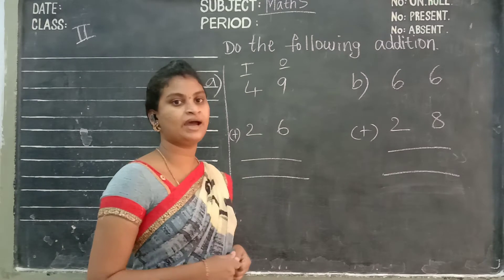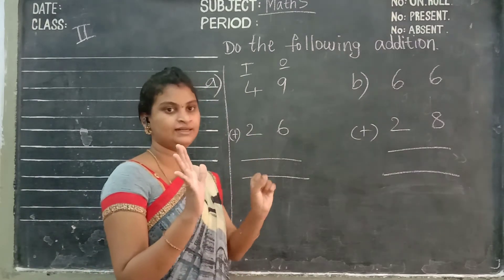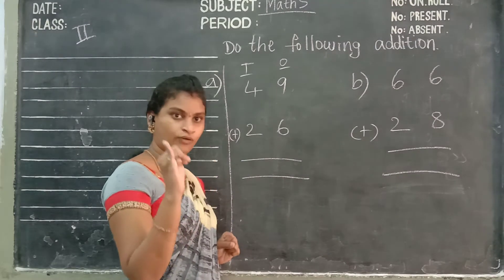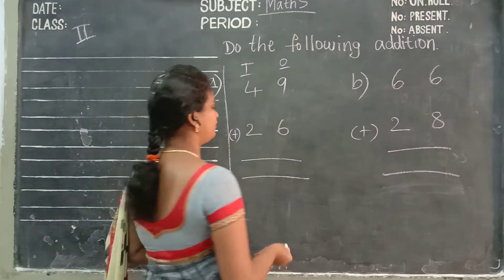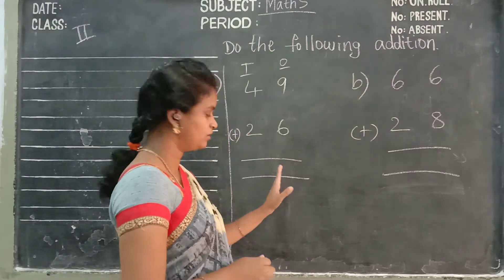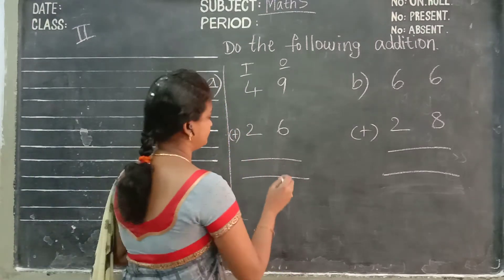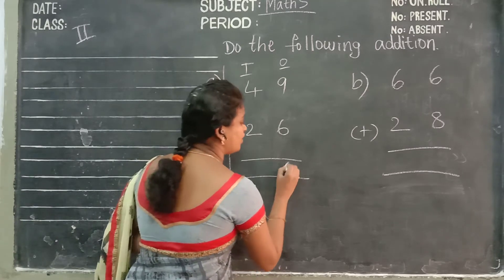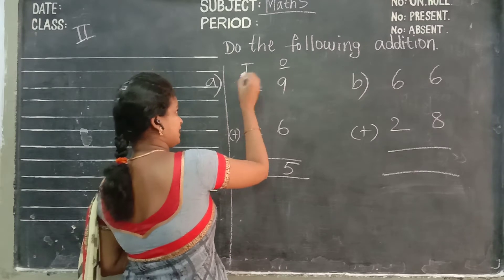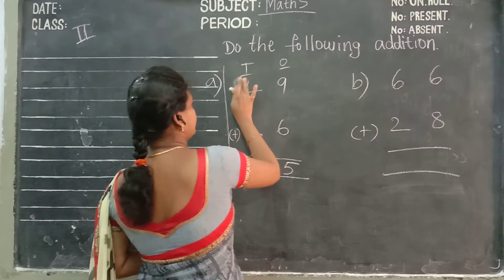9, keep in your mind. Take 6 fingers: 9 after 10, 11, 12, 13, 14, 15. So 15. You should write: 5 in 1's place here, and 1 in 10's place here. Right, 1.